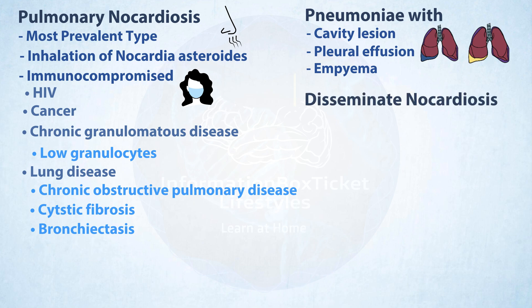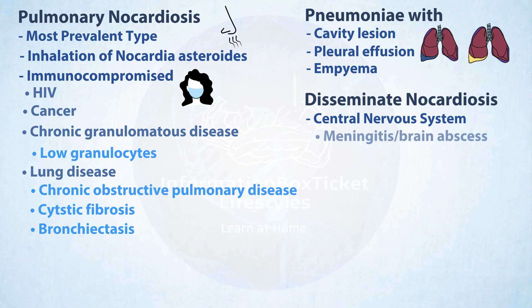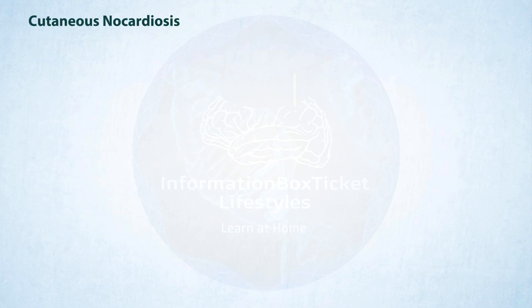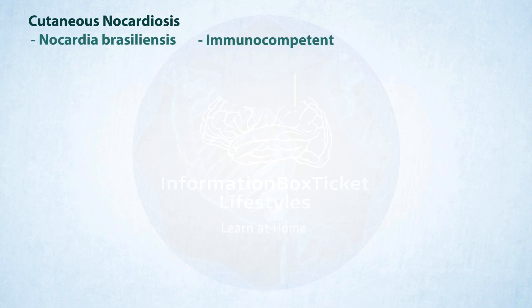Disseminated nocardiosis is typically a complication of pulmonary nocardiosis, and the bacterium frequently spreads to the central nervous system, producing meningitis or brain abscesses, or to the heart, causing endocarditis. Cutaneous nocardiosis, on the other hand, is caused by Nocardia brasiliensis and often affects immunocompetent individuals when the infection enters the body via skin sores.